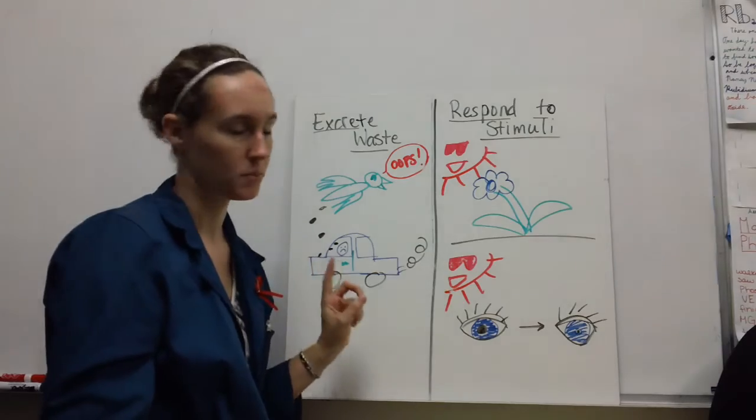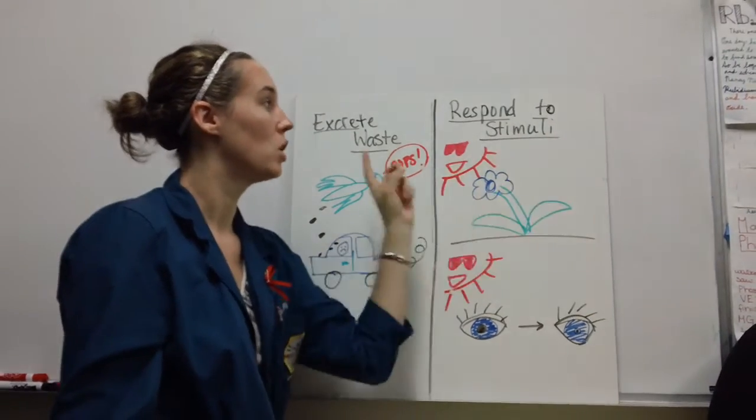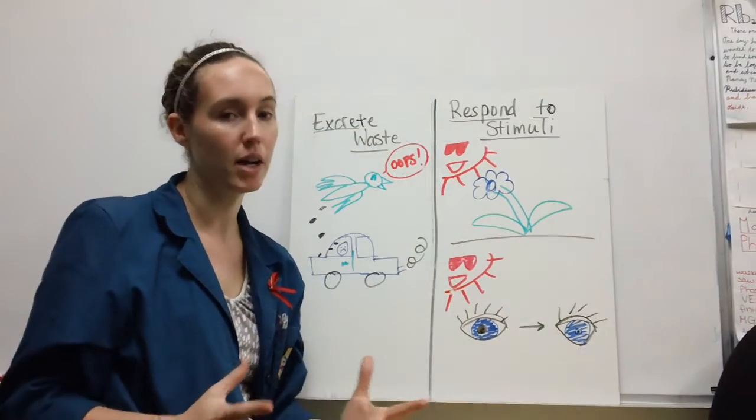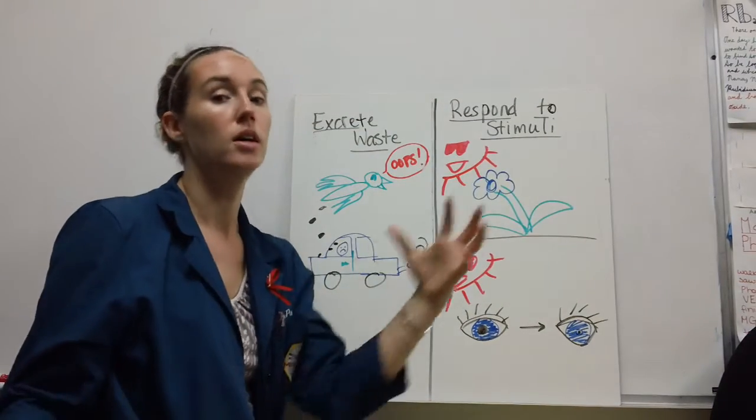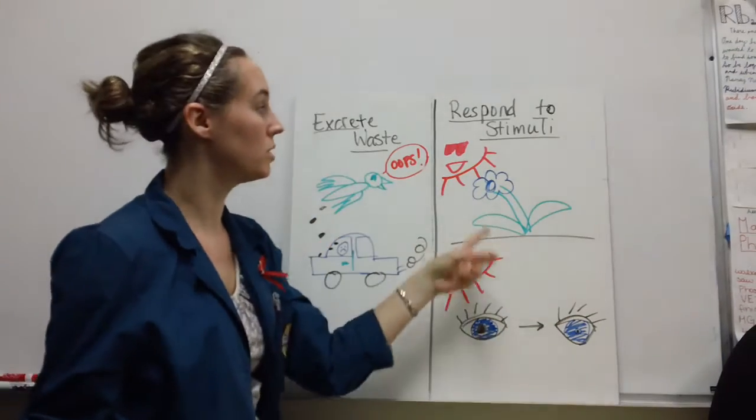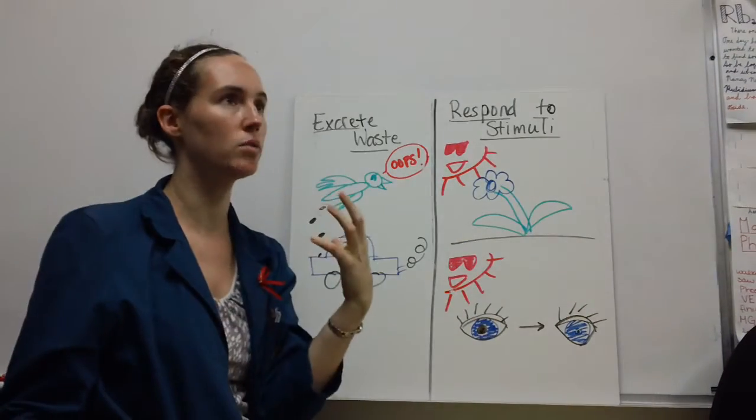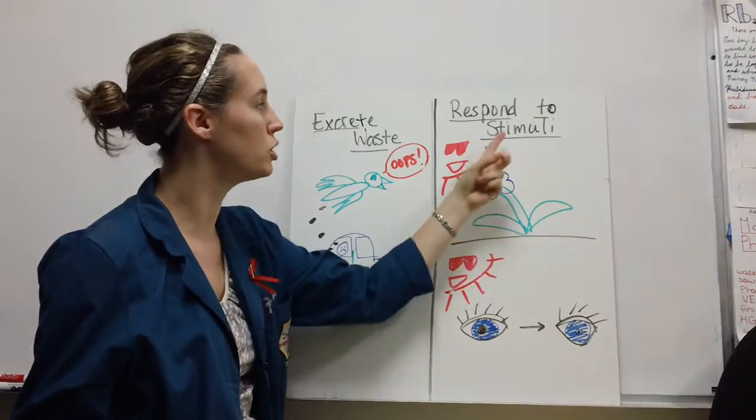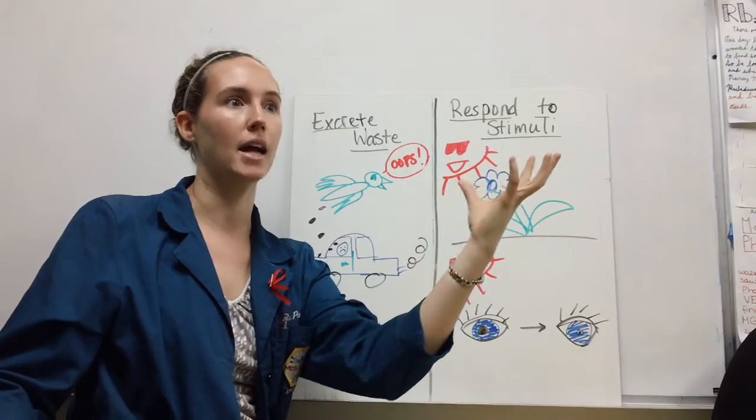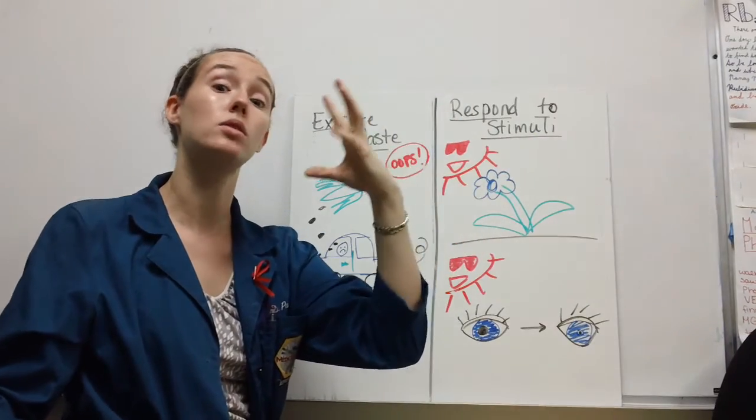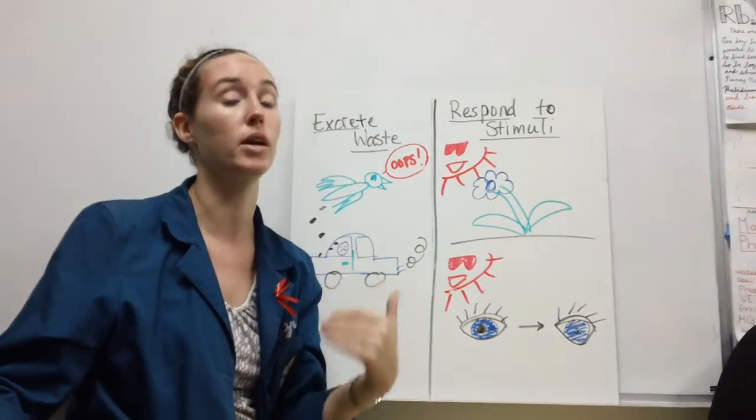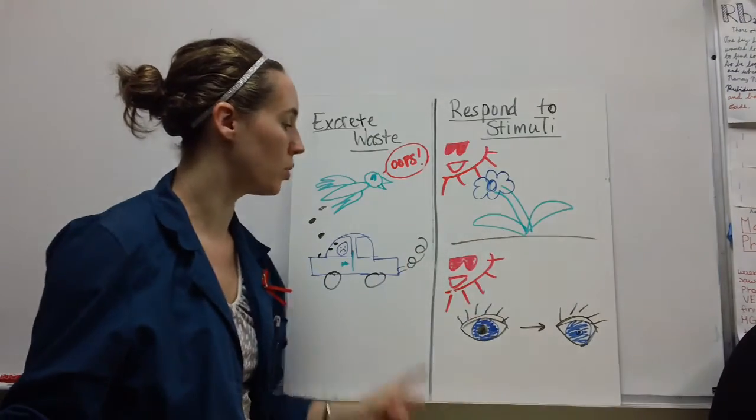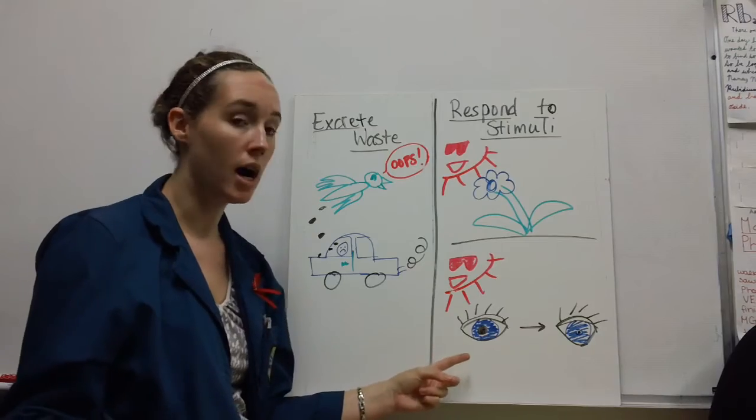Finally, all living things respond to stimuli. If something is going on in the environment coming at you, an organism can respond to that. In this top example, you may not realize that plants move, but plants do respond to the sun and can actually bend towards the light to have a greater photosynthetic effect.